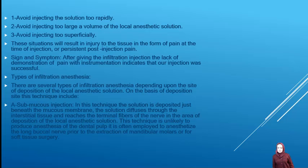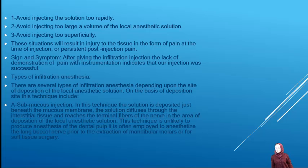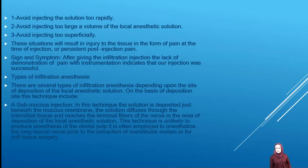There are several types of infiltration anesthesia depending upon the site of deposition of the local anesthetic solution. On the basis of position, this technique includes submucous injection. In this technique, the solution is deposited just beneath the mucous membrane; it diffuses through the interstitial tissue and reaches the terminal fibers of the nerve. This technique is unlikely to produce anesthesia of the dental pulp and is often used to anesthetize the long buccal nerve prior to extraction of mandibular molars or for soft tissue surgery.